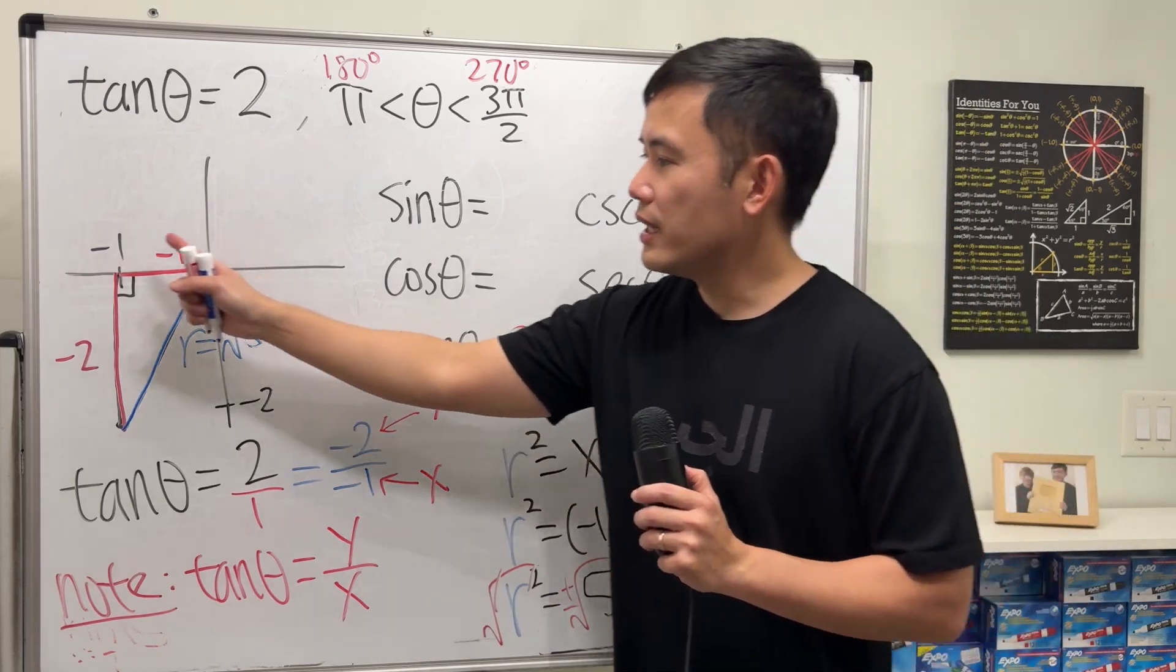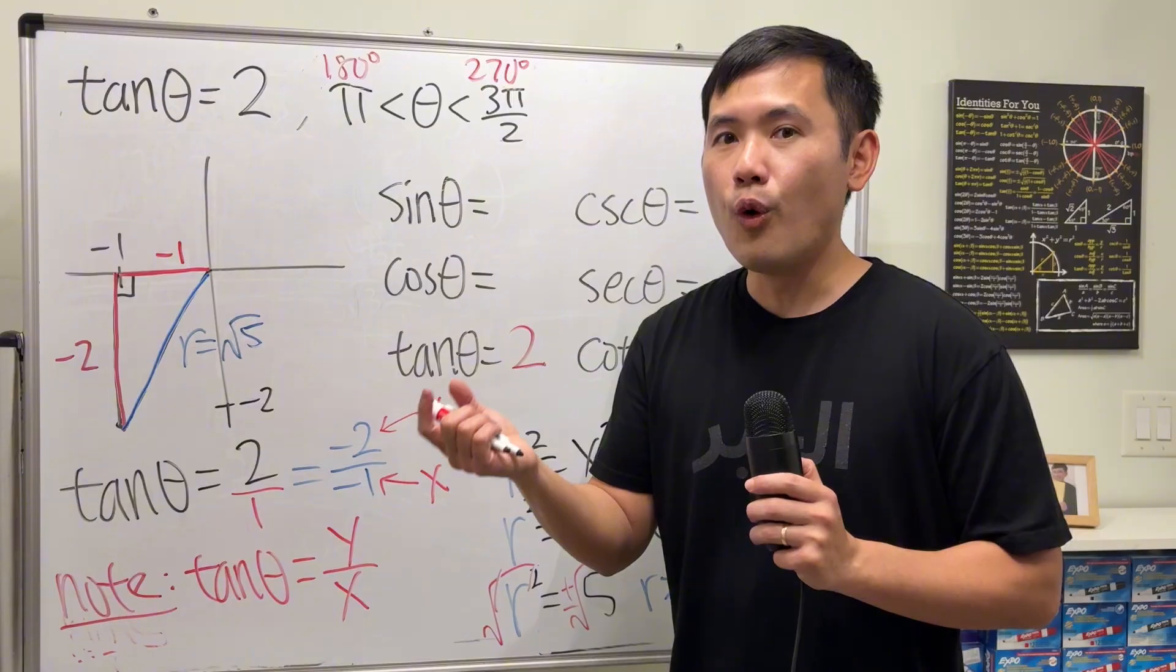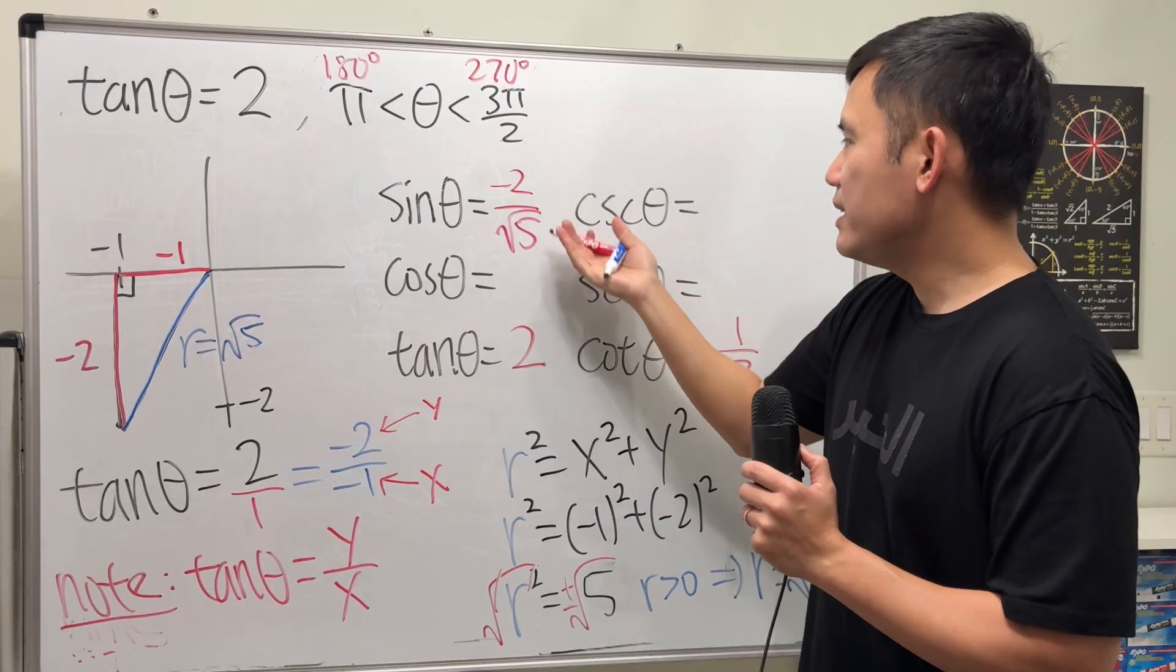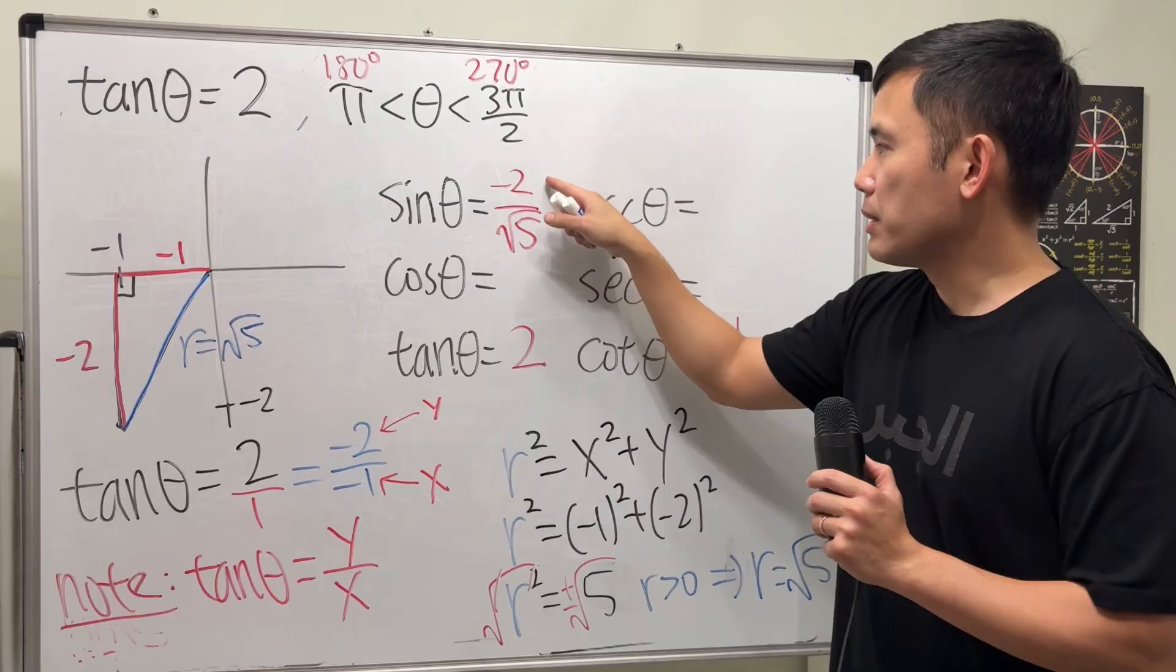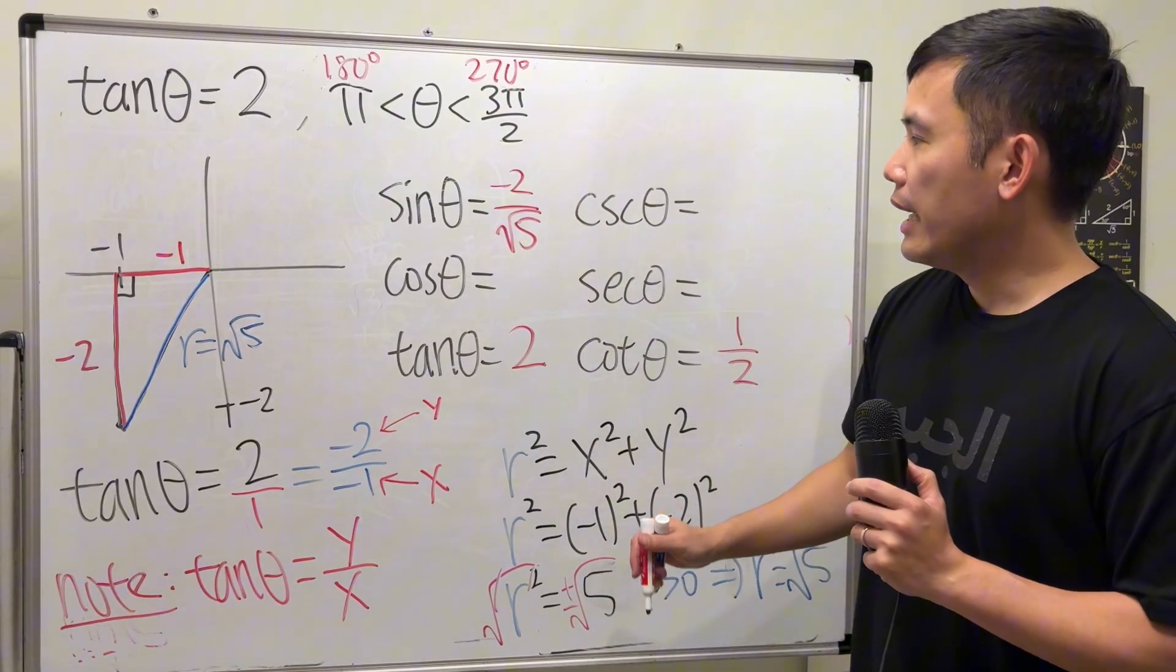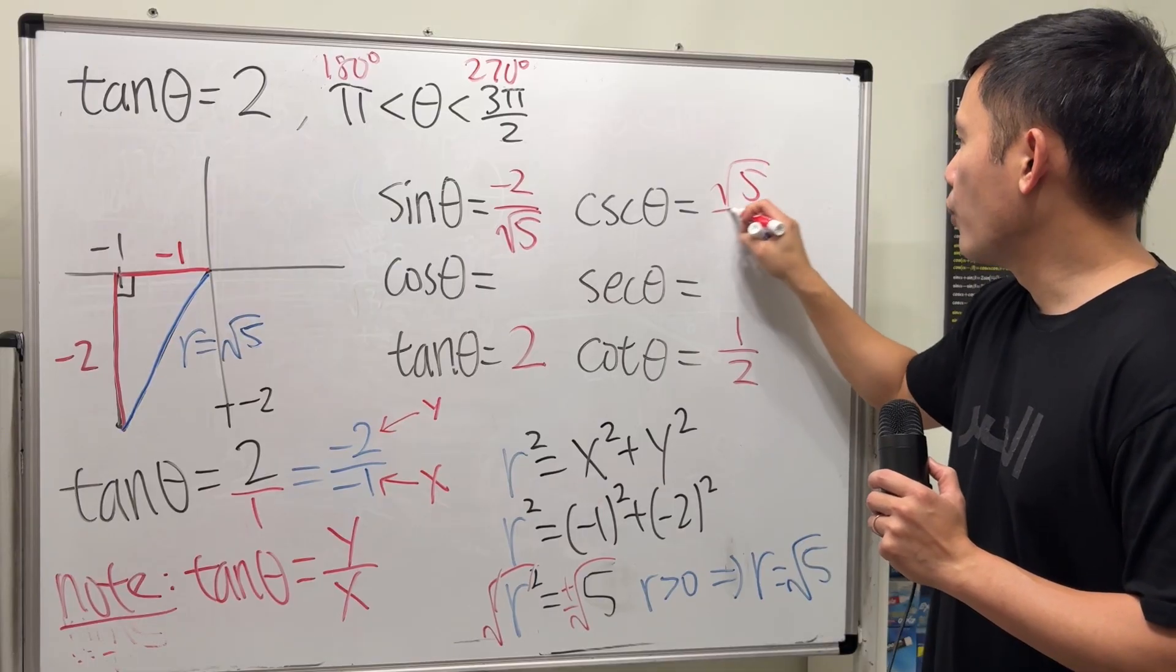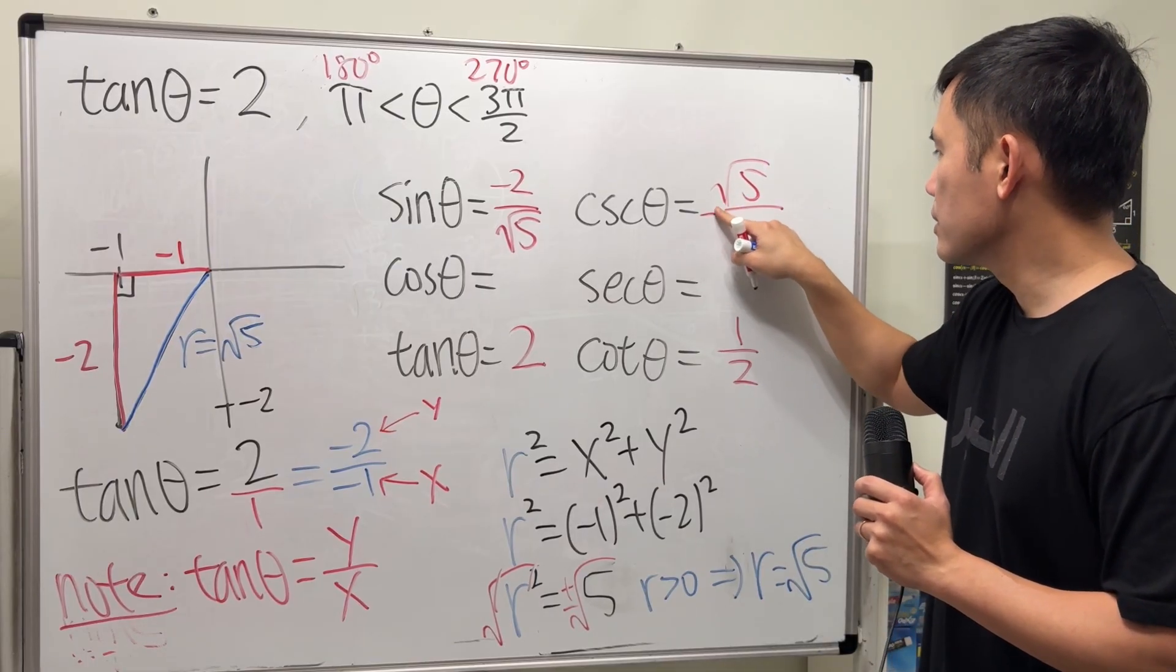For sine, look at this reference triangle and you can do the usual business, which is opposite over hypotenuse. Negative 2 over square root of 5. And depending if you have to rationalize the denominator or not, if you do, just multiply the top and bottom by square root of 5. I'm going to leave that to you. And for cosecant, once you have sine, this is just the reciprocal of it, so that's square root of 5 over negative 2. You can put a negative in the front or down here, it doesn't matter.